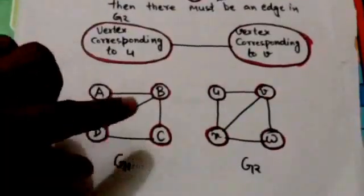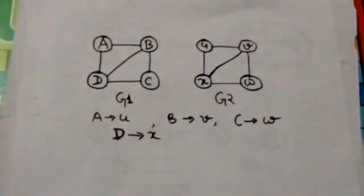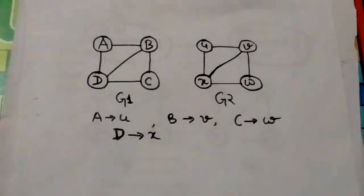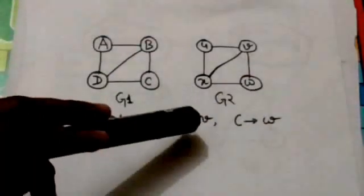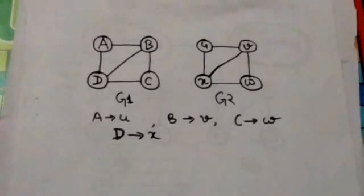Consider these two graphs G1 and G2. These two graphs are isomorphic because they have same number of vertices and edges. Vertex U is corresponding to vertex A, vertex V is corresponding to vertex B, vertex C is corresponding to vertex W, and vertex D is corresponding to vertex X.